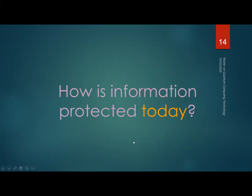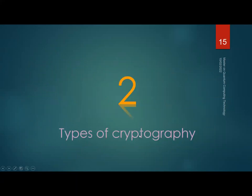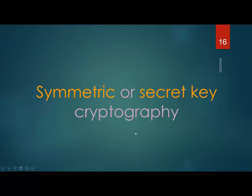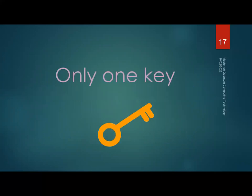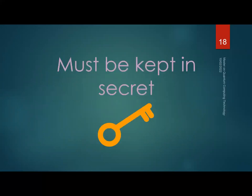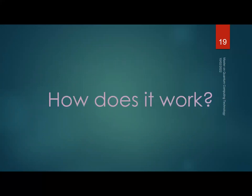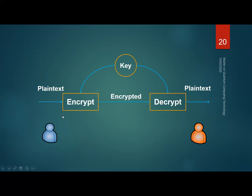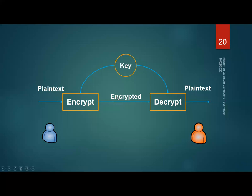Let me give a brief introduction to how cryptography works. One type is symmetric or secret-key cryptography, where there is only one key that must be kept secret. The sender takes the key — which both parties must have in advance — encrypts the plaintext, sends the encrypted message, and the receiver decrypts it using the same key.